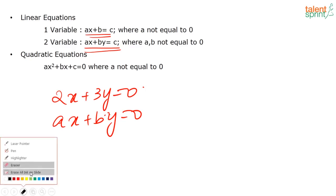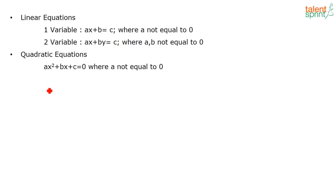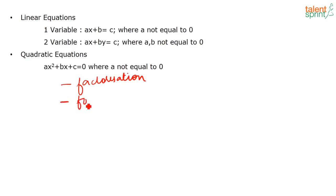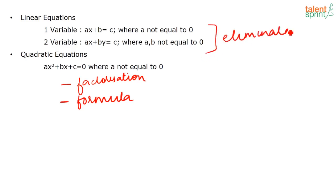Coming to quadratic equations — quadratic equations are equations of the form AX² + BX + C = 0, where A is not equal to 0. There are two methods to solve a quadratic equation: the first method is factorization, and the next method is the formula method. For linear equations you eliminate one variable or use substitution. For quadratic equations you either solve by factorization or by formula.